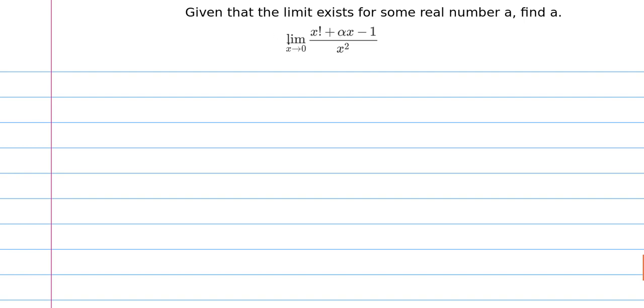The limit as x goes to 0 of x factorial plus alpha x minus 1 divided by x squared. These should be alphas. I thought I was going to write it out, but I decided to include a screenshot of the problem.